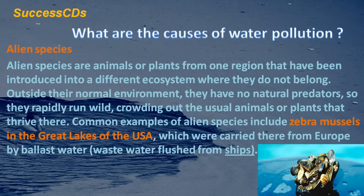Alien species are animals or plants from one region that have been introduced into a different ecosystem where they do not belong. Outside their normal environment, they have no natural predators so they rapidly run wild, crowding out the usual animals or plants that thrive there. Common examples include zebra mussels in the Great Lakes of the USA, which were carried there from Europe by ballast water.